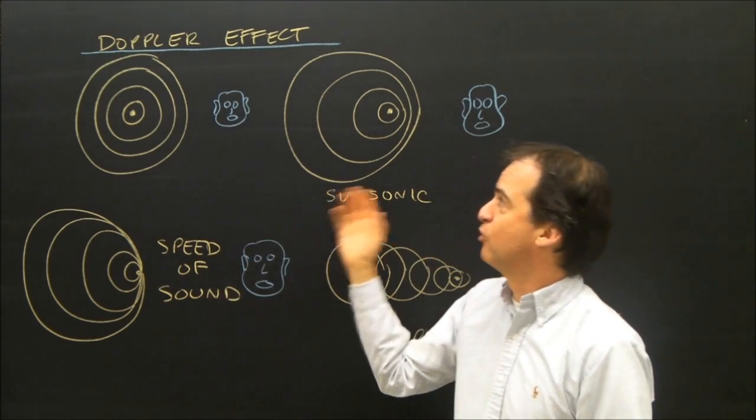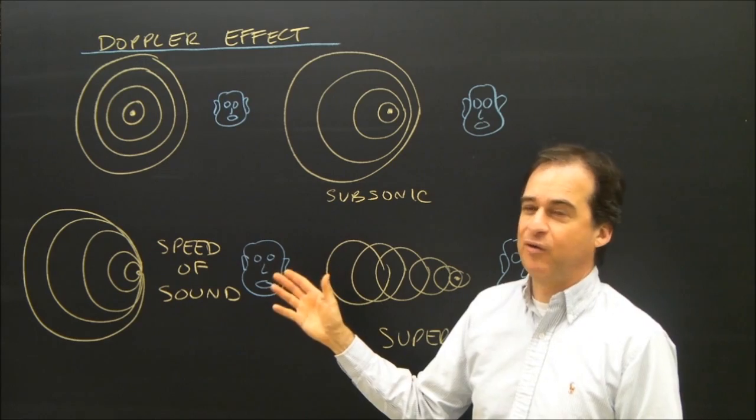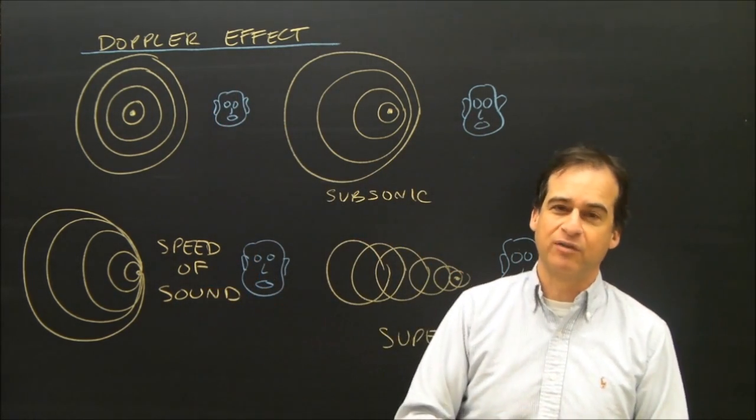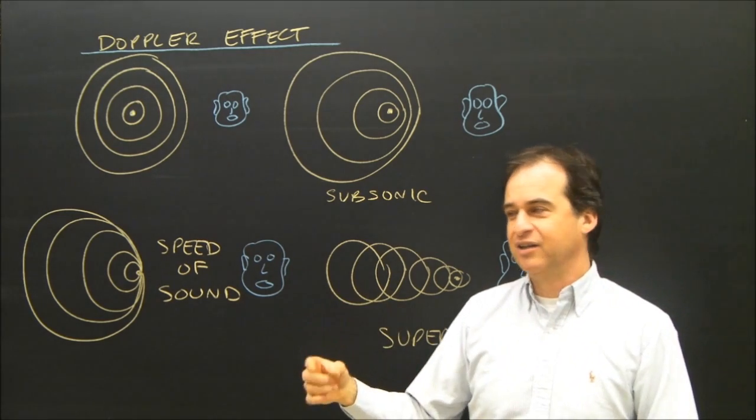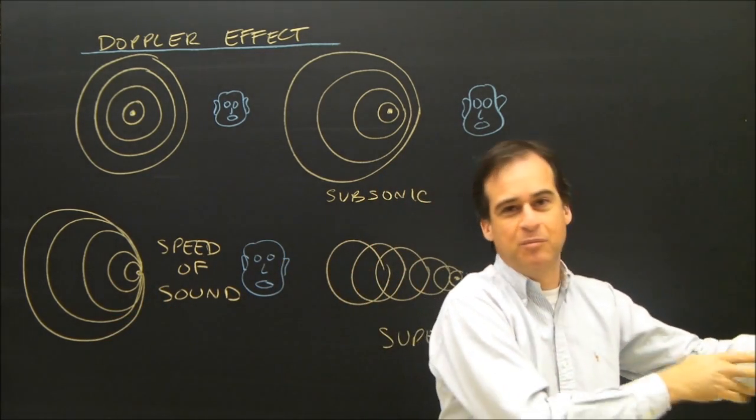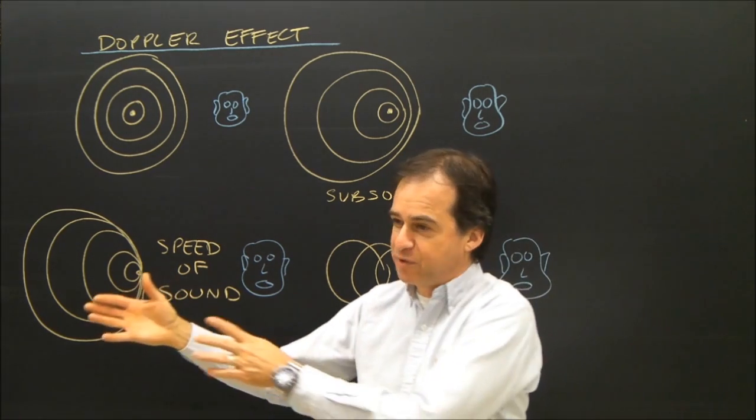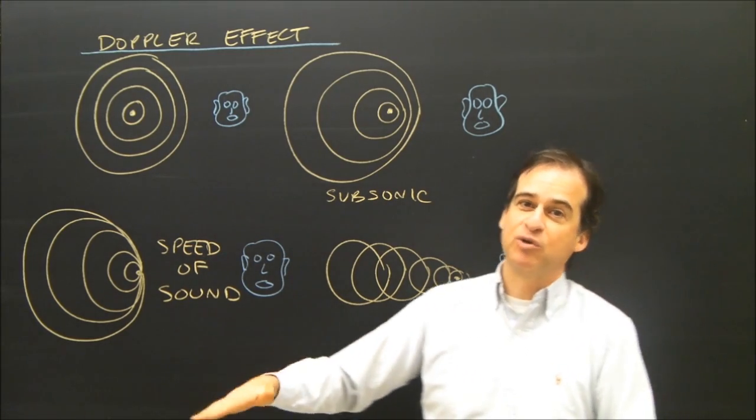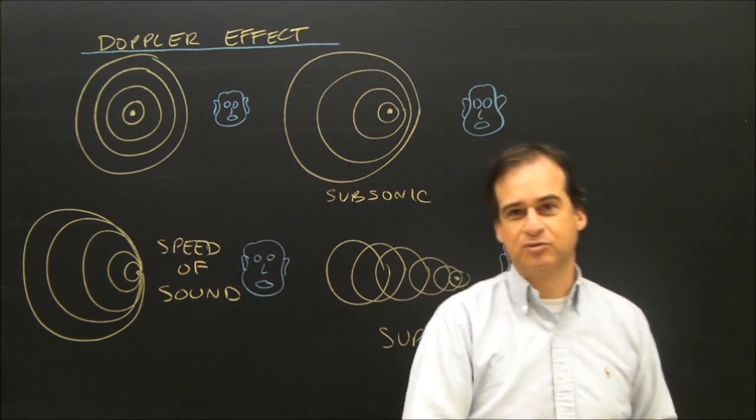The Doppler effect is something we've all heard. Let's look at an explanation of how it happens. The Doppler effect is that sound you hear when an ambulance is driving by and its siren is wailing. What you hear is the siren sound gets higher in pitch and then as it passes you it gets lower in pitch. So when an object moves past you and it's making sound waves, the pitch will go up and then as it passes you the pitch will go down.